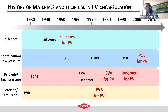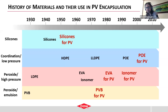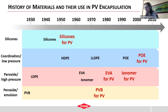Beginning with the history — this is a timeline showing the development of these materials. Their first development is shown in black and their first use as a PV encapsulant is shown in red. The oldest polymer materials were developed at the beginning of the previous century: polyvinyl butyral and LDPE. In the 1940s, silicones were developed and were the first material to be used as an encapsulant for PV devices in the 50s. Some other materials developed along the way: HDPE, not used as a PV encapsulant, but related to materials that are. In the 60s, EVA and ionomer were developed.